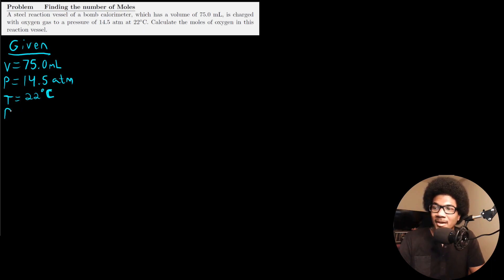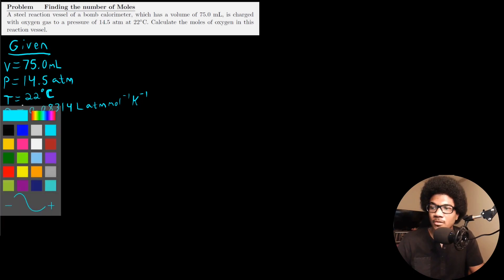We also know the gas constant. We always have R. So our R value 0.08314 liter ATM per mole per Kelvin. One thing that you'll notice here: if we look at our gas constant, looking at the units for our gas constant, we have a bit of a units issue here based on the numbers that we've been given. Our gas constant considers volume in liters. We've been given a volume in milliliters. It also considers a temperature in Kelvin, and we've been given a temperature in Celsius. So we want to make both of those conversions.